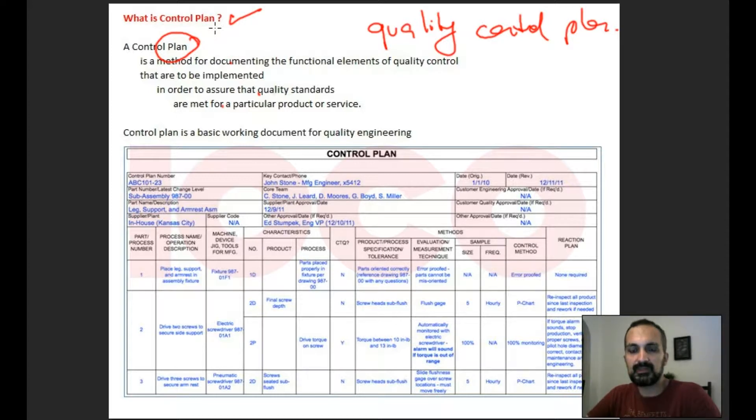the functional elements of quality control that are to be implemented in order to ensure that quality standards are met for a particular product or service.